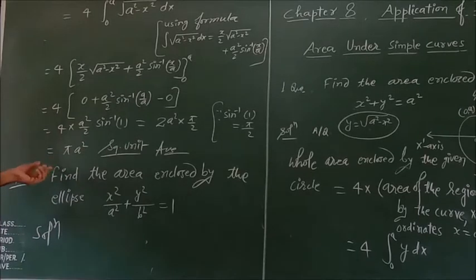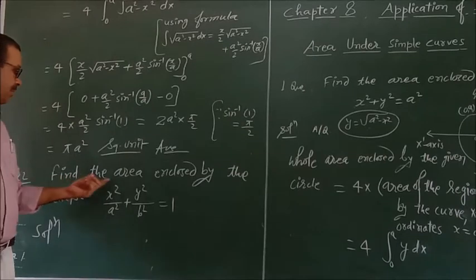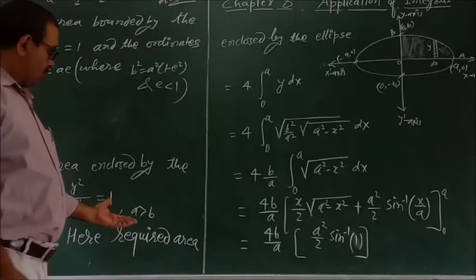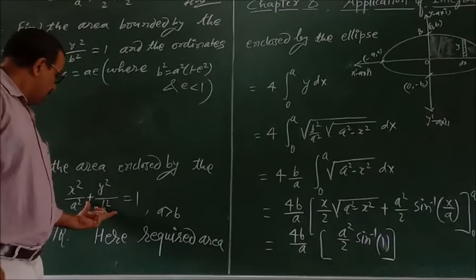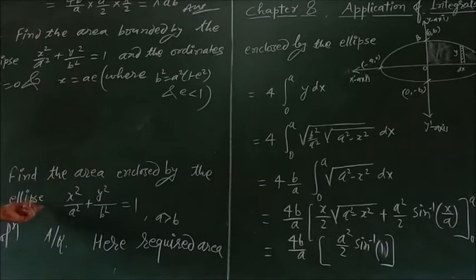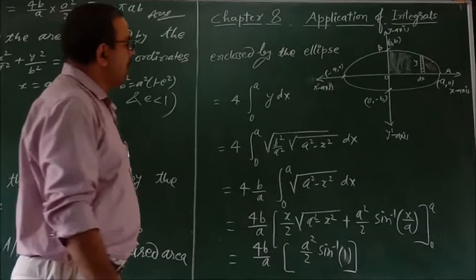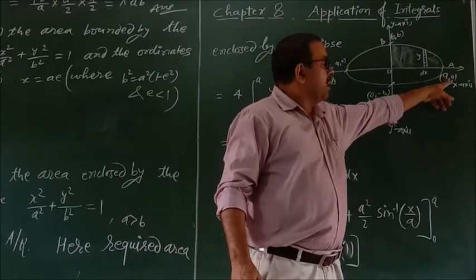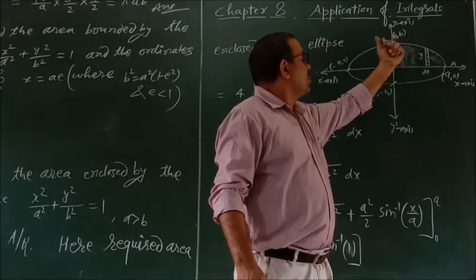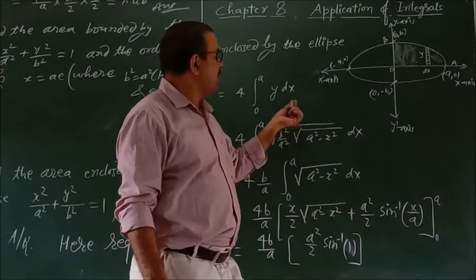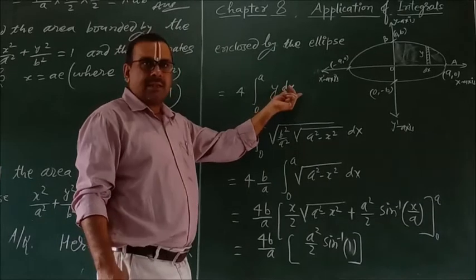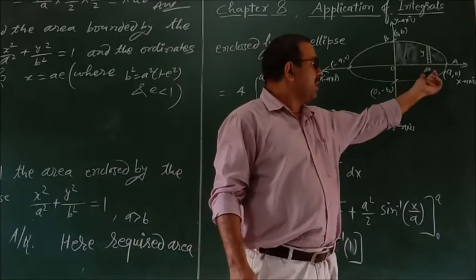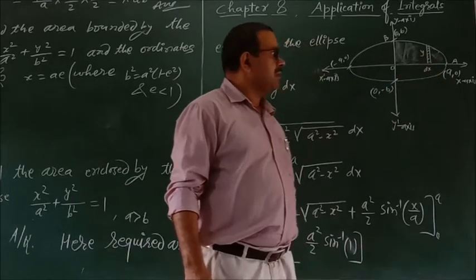Now we are going to the second problem: find the area enclosed by the ellipse. We are going to make the figure of the ellipse. According to the next example, we know the equation of the ellipse. The ellipse cuts the axes at (a, 0) and (0, b). It means the bounded area will be equal to the integral from 0 to a of y dx.